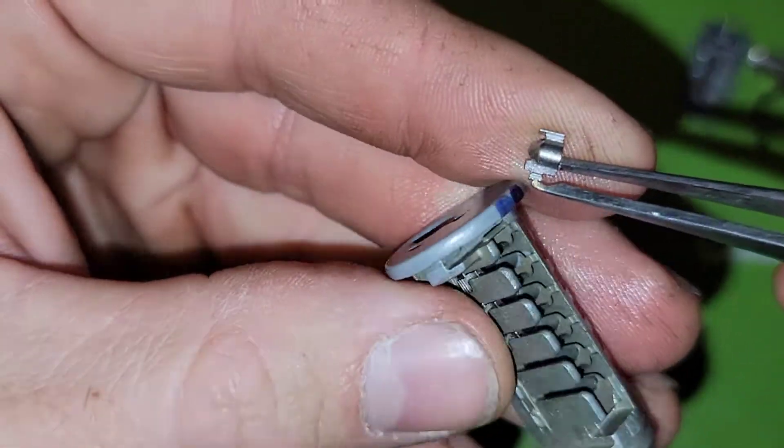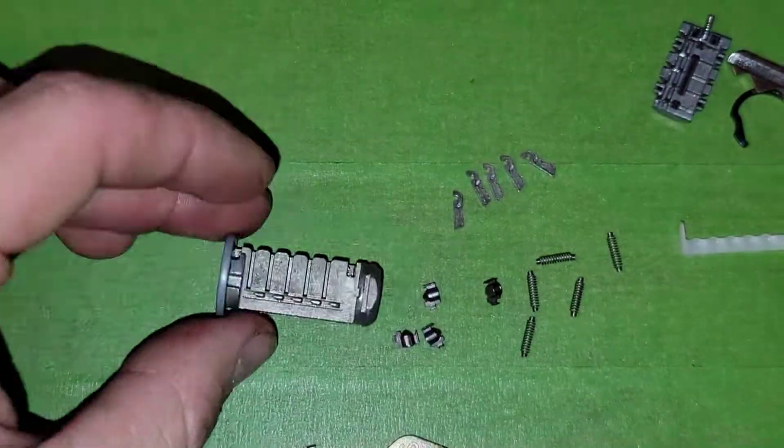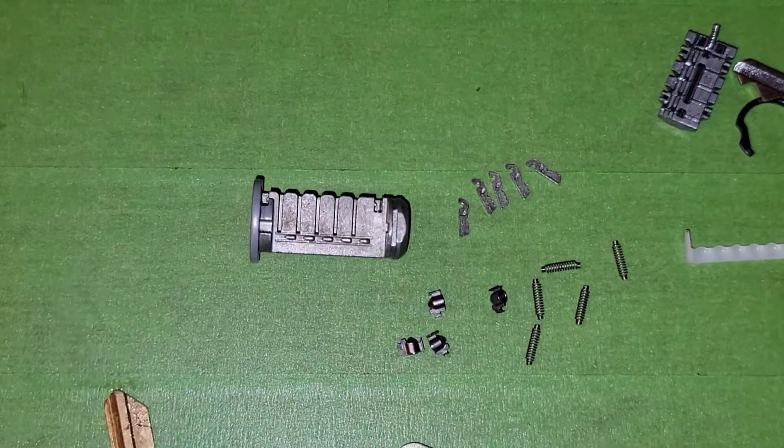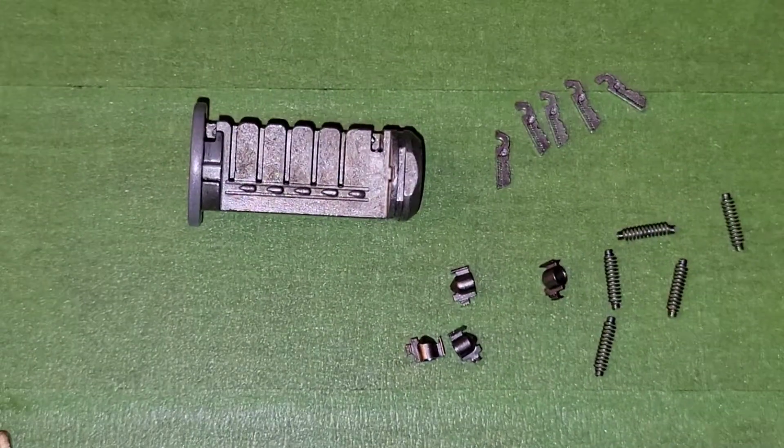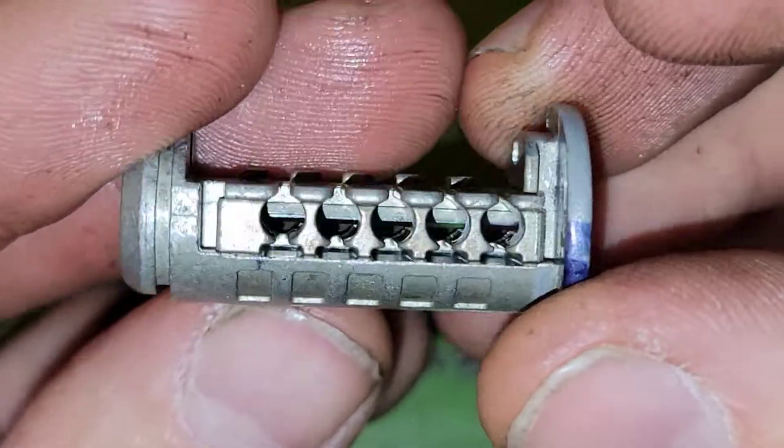Now I'm going to pull out all the springs. We're going to pull out all these little caps that actually interact with the key itself and this is what the cylinder looks like completely exploded.